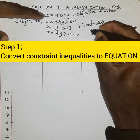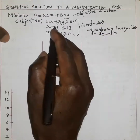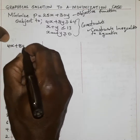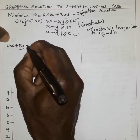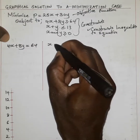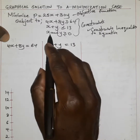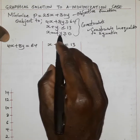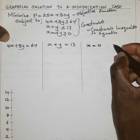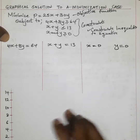Remember, inequalities are given by the inequality symbol. So if you convert, for example, 4X plus 8Y, we say it is equal to 64. We do the same for the second one: X plus Y should be equal to 13. Then because we have X and Y, we say X is equal to 0 and Y is also equal to 0.